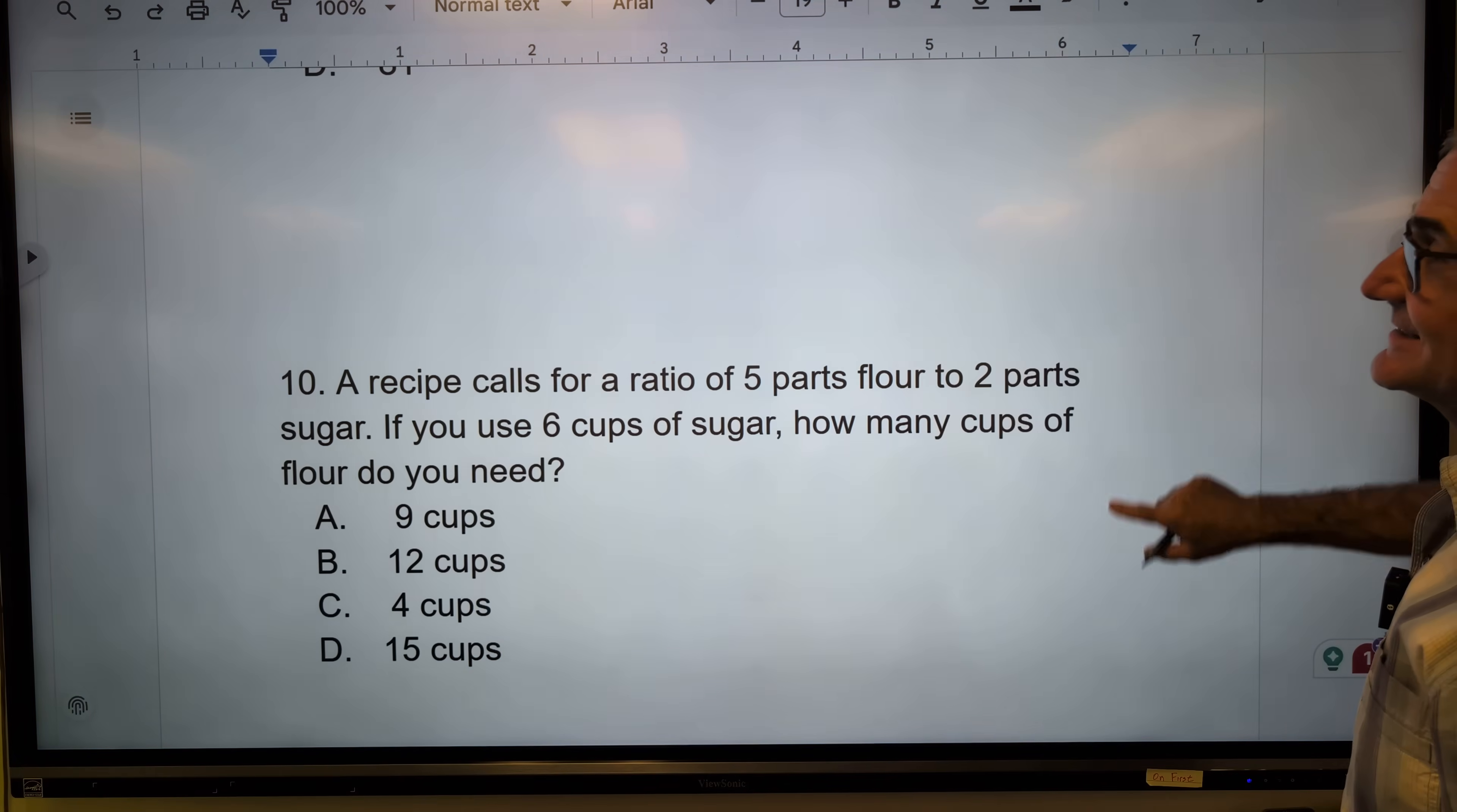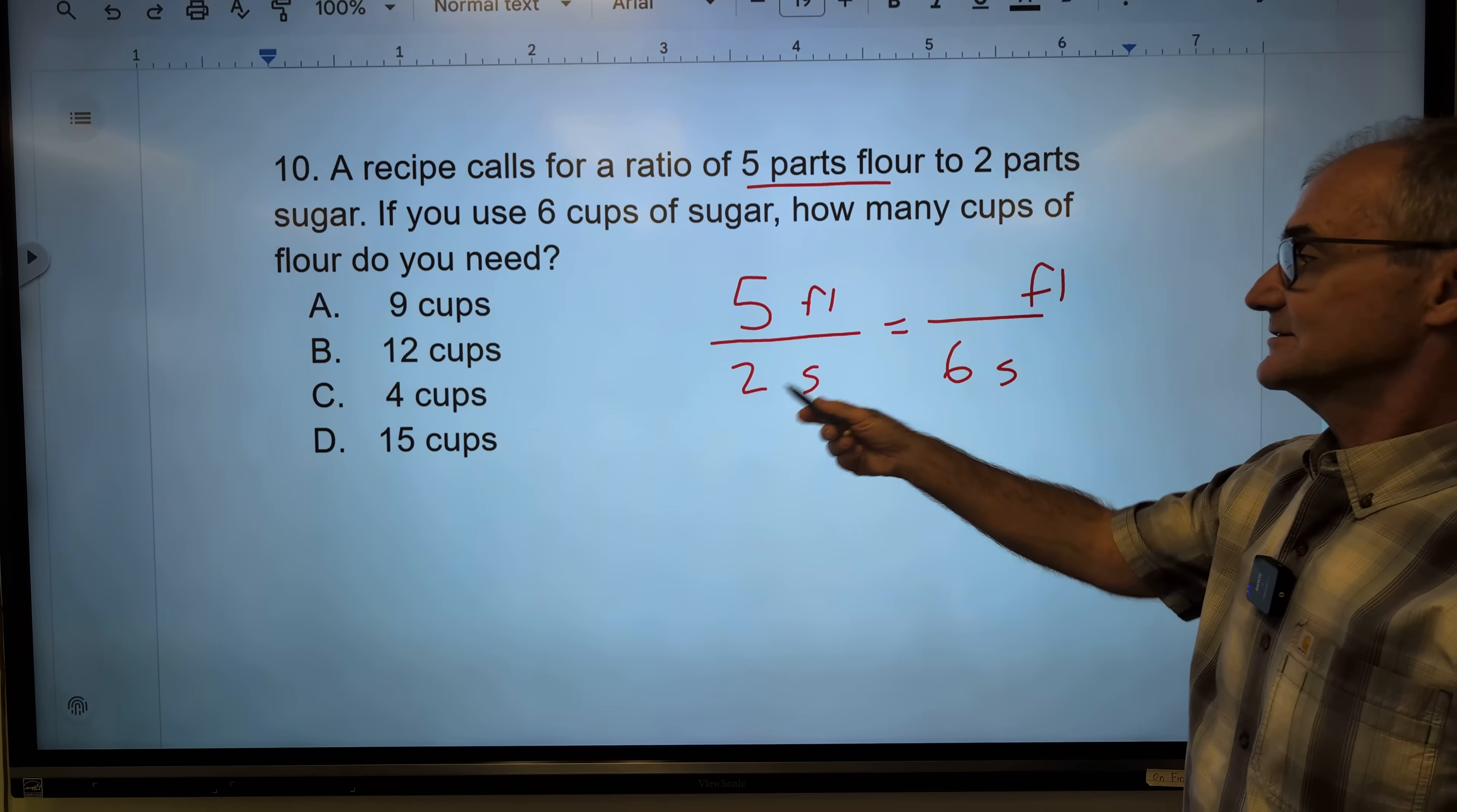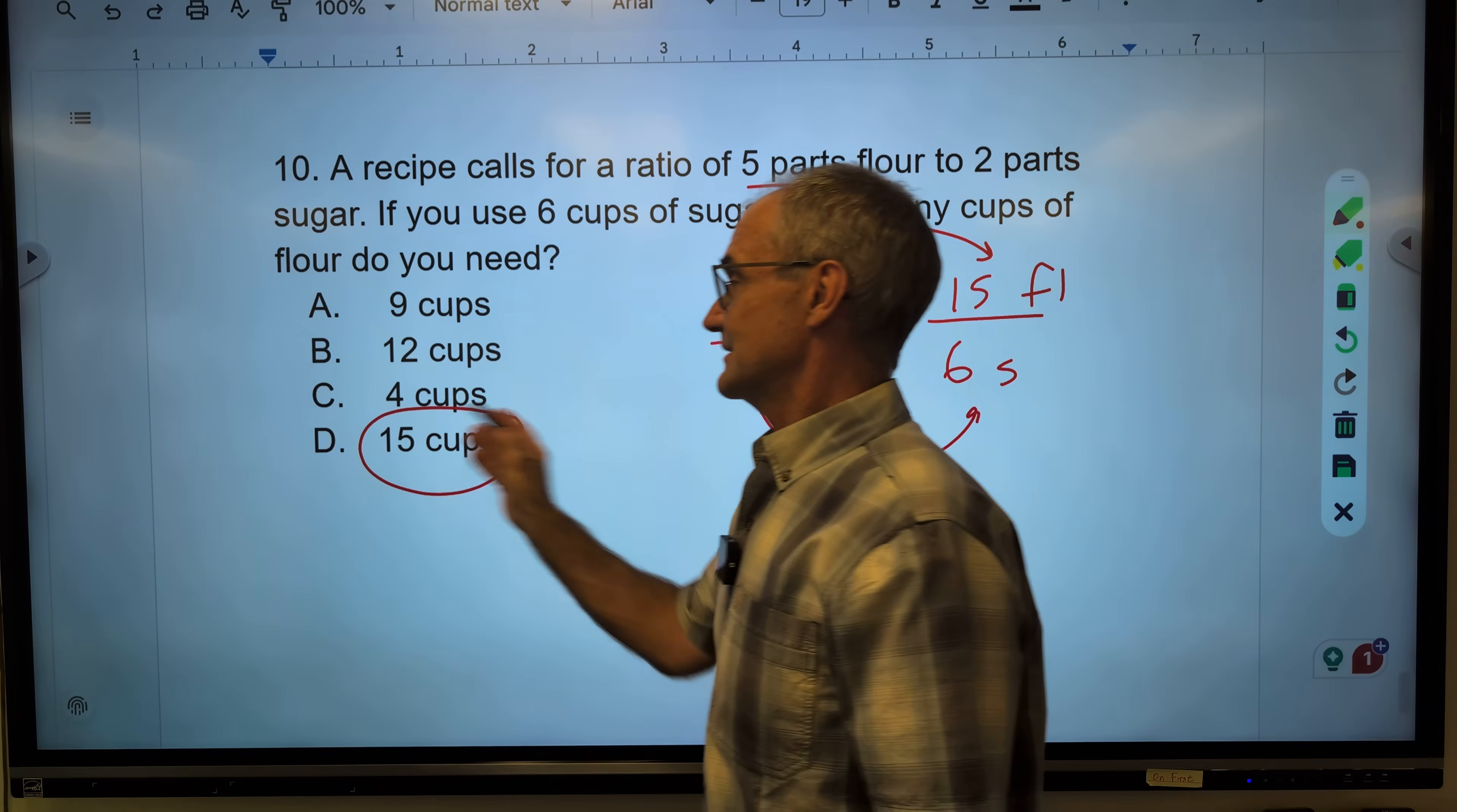Last problem. Again, if you're new to the channel, subscribe, support the channel, and check out my book if you want to do a lot more of this. A recipe calls for 5 parts flour to 2 parts sugar. If you use 6 cups of sugar, how many cups of flour? So I have one ratio equal to another. I have 5 flour to 2 sugar. How many flour to how many sugar? This isn't too hard because I could go, how did I get here? I multiplied this by 3, so I also have to multiply this by 3 as well. 5 times 3 is 15. These ratios are equivalent, meaning they have the same value. So 15 is the number of cups I need.